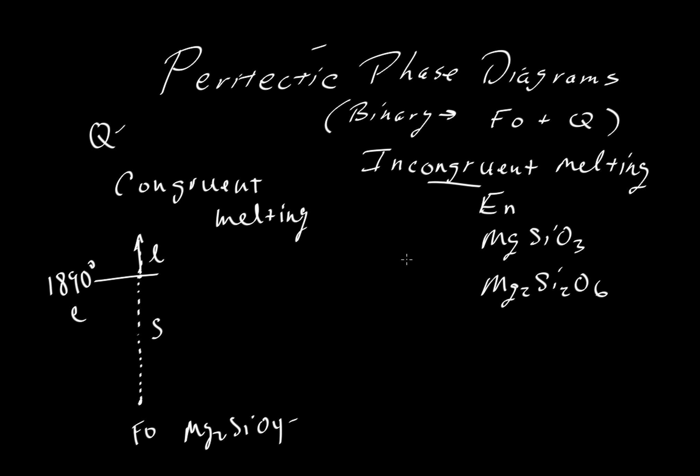We can do the same thing with quartz. So let's take quartz. We can heat it up to a temperature of 1713 degrees centigrade. Below that temperature is solid, above it is liquid. This is another case of congruent melting. The solid starts out as a composition of SiO2, and the liquid that we get is also SiO2.